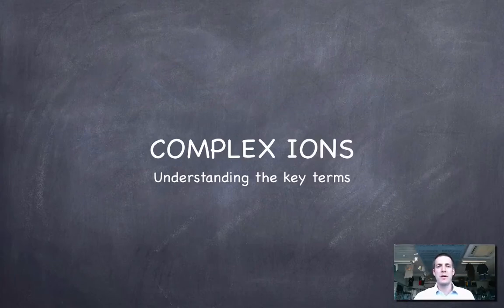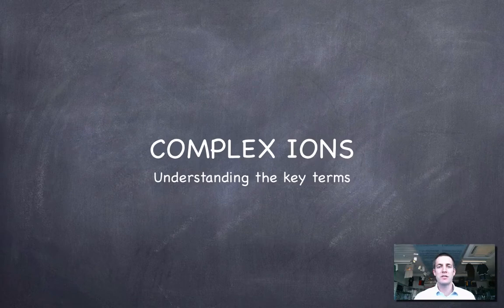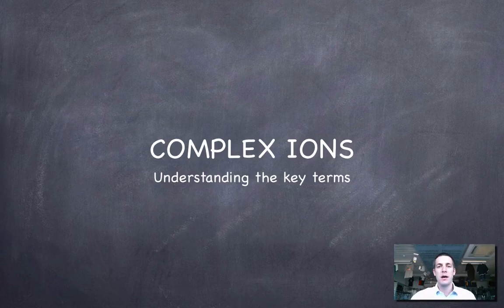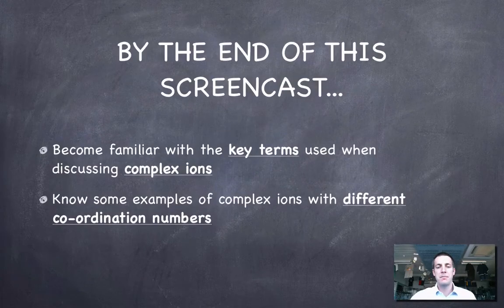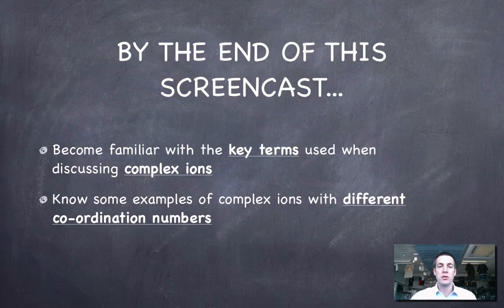Hello and welcome to this film, which is all about complex ions. It's the second-to-last film of the series in the high-level periodicity topic. It looks at some of the properties of the d-block elements not covered in the previous film, and we're introducing some key terms used when talking about complex ions. By the end you should be familiar with key terms, understand what a coordination number is, and remember examples of complexes with different coordination numbers.